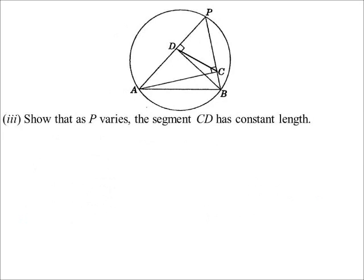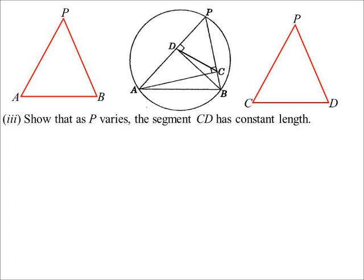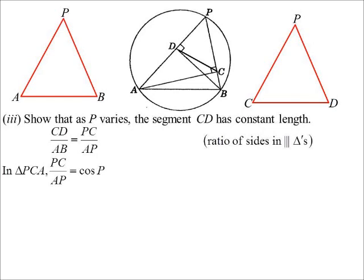So as P moves around our circumference, the length of CD will not change. So it doesn't matter where we put P, that length's going to be the same. So let's just prove that. I've just proven these two triangles are similar. So I'm just going to redraw them sort of side by side so I can sort of relate to them. Now, so the ratio of CD to AP must be the same as PC to AP. So there's our ratio of sides in similar triangles. Now, in triangle PCA, so we just look at that. PC over AP is actually the cosine of P. So it ends up being a right-angled triangle.